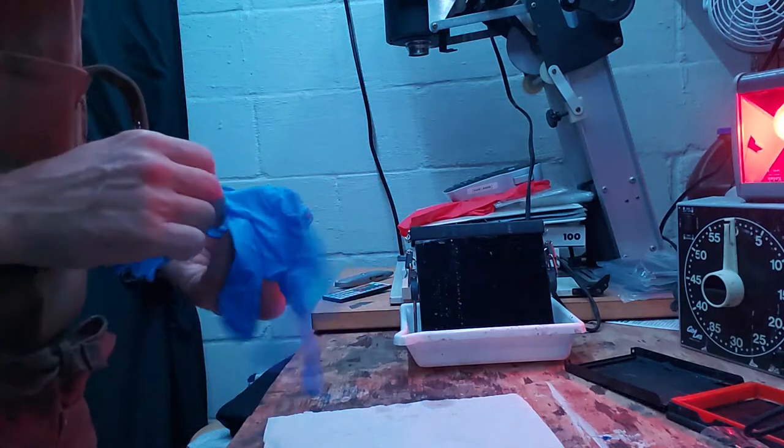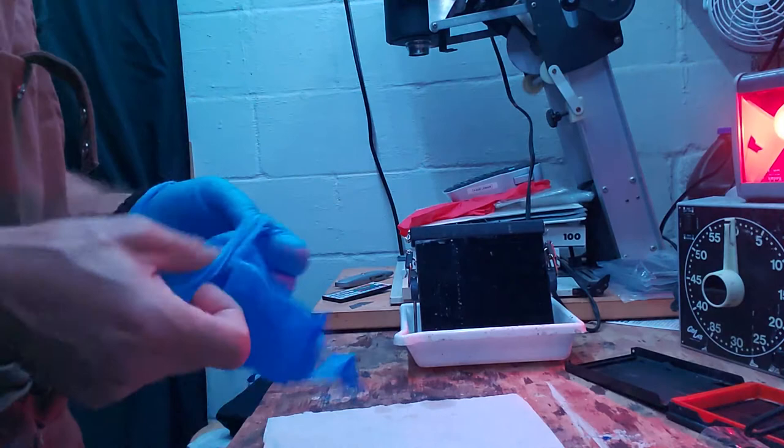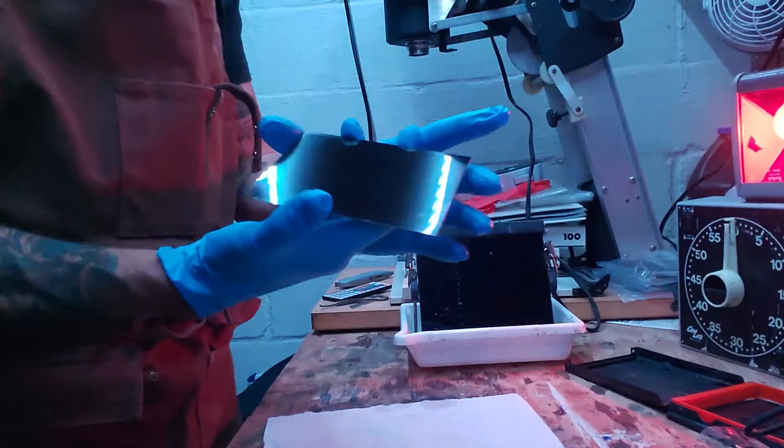So this video is going to quickly go start to finish through the process of creating a wet plate. In this case I'll be making a tintype. I'll be treating a piece of painted aluminum, just a 4x5 piece of aluminum like this. We'll coat it with collodion.